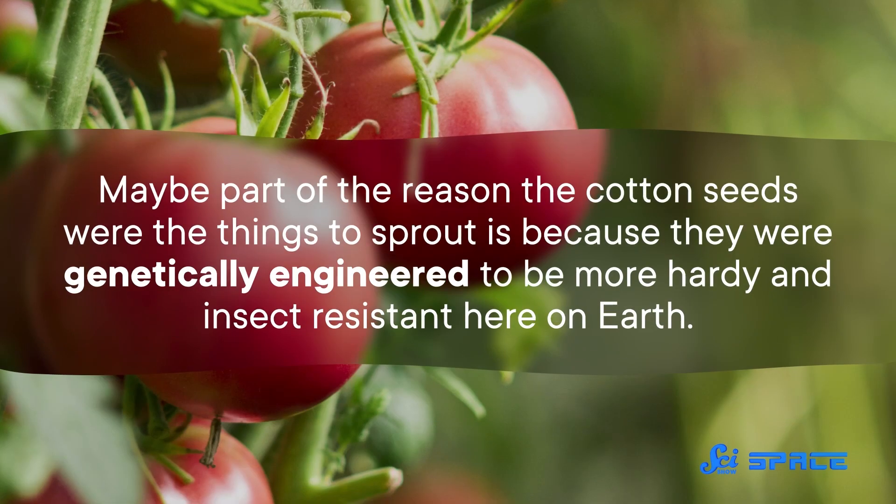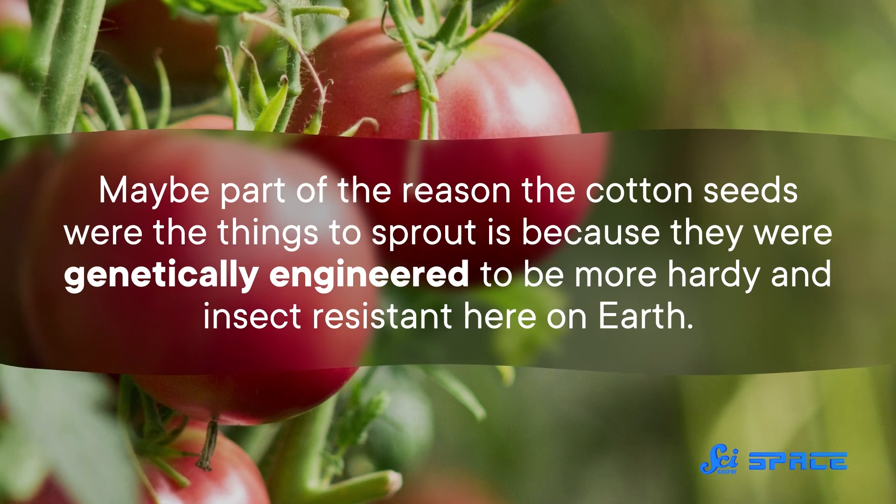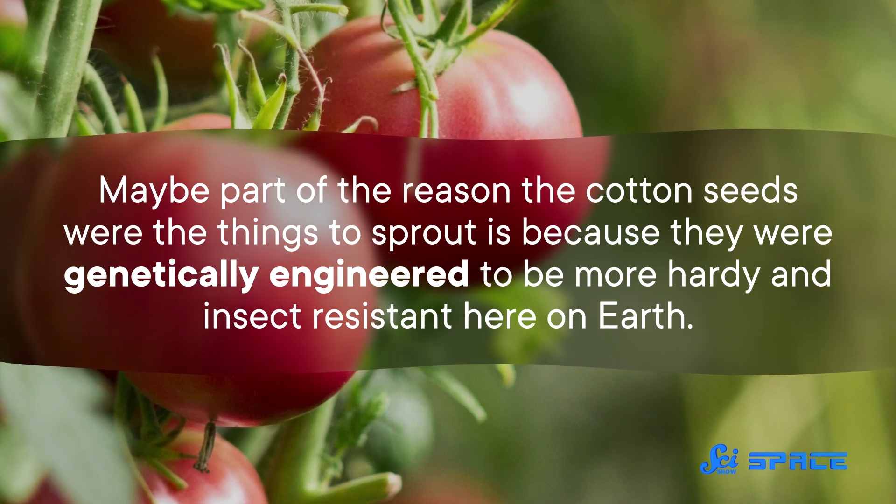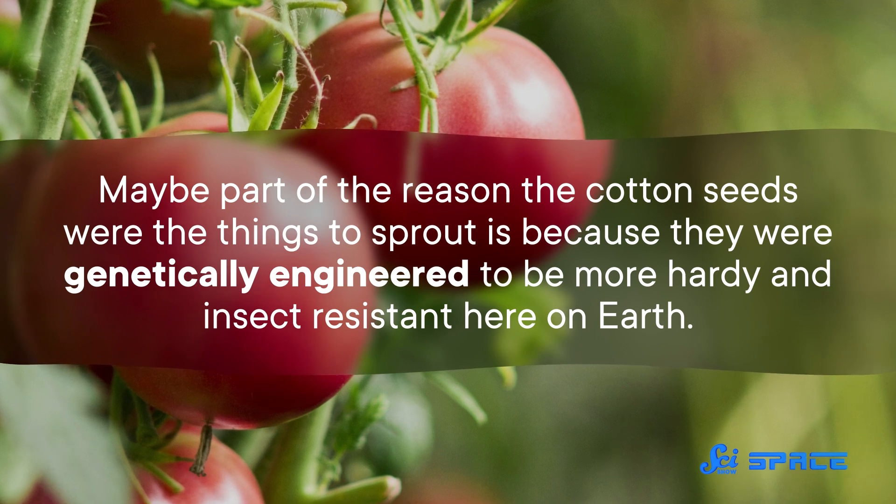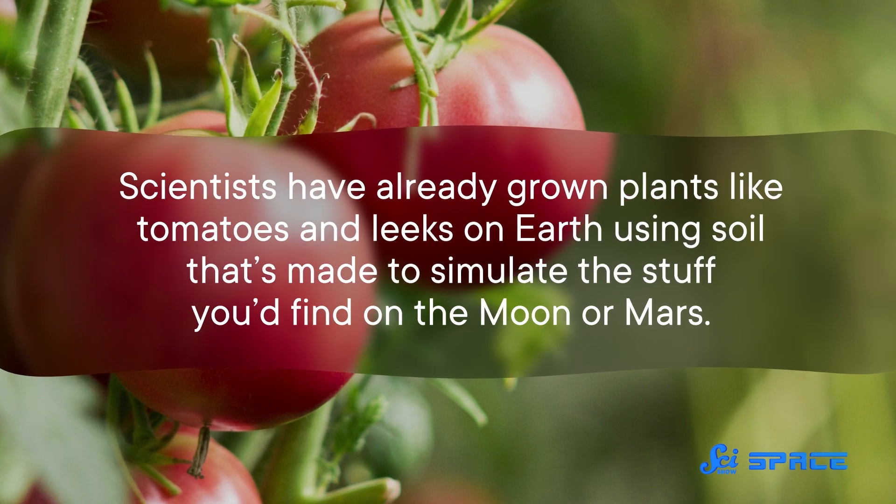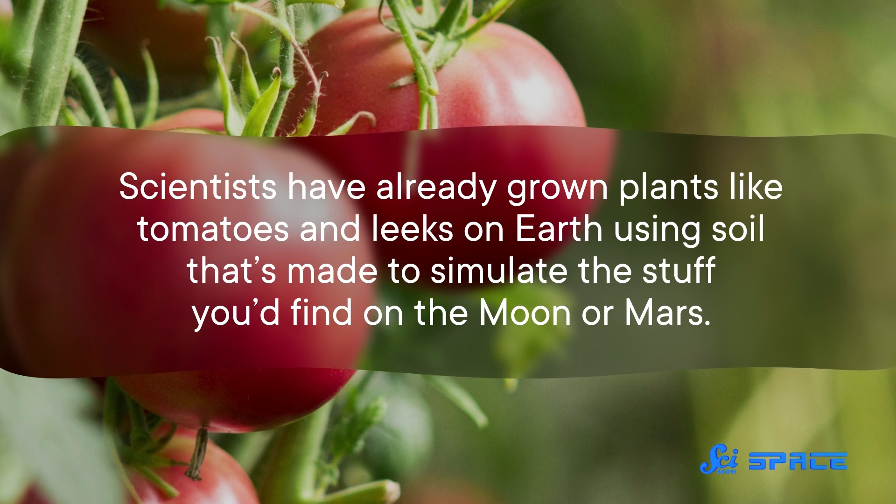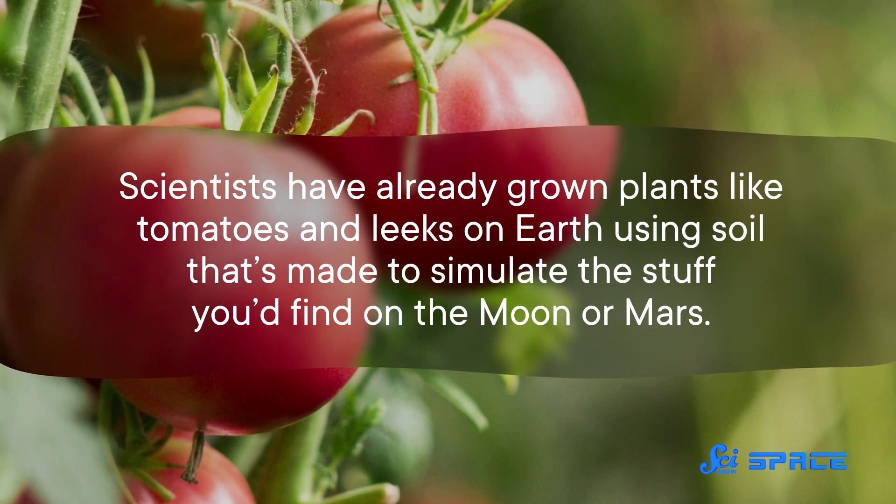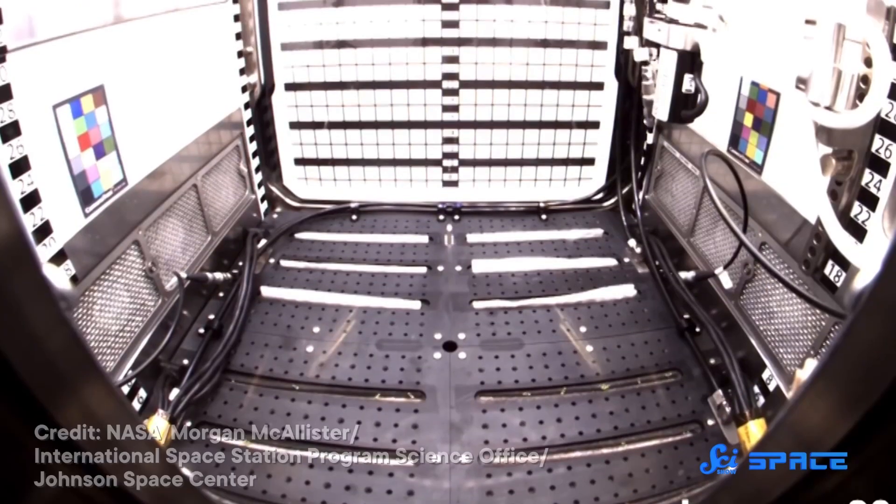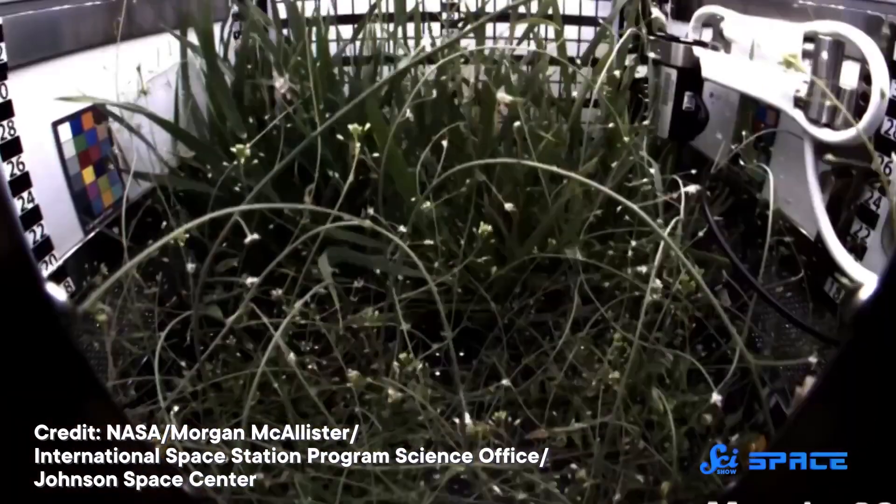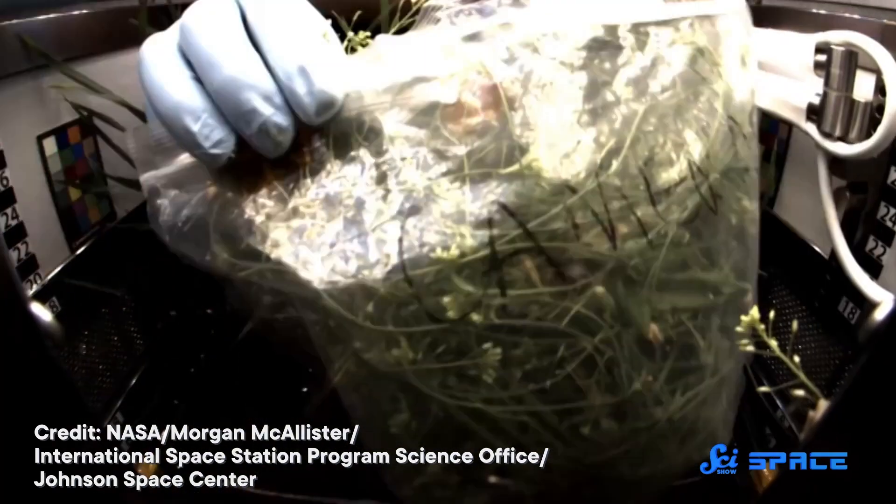We might even be able to go as far as to genetically engineer plants to grow in lunar or Martian soil. Maybe part of the reason the cotton seeds were the things to sprout is because they were genetically engineered to be more hardy and insect-resistant here on Earth. Scientists have already grown plants like tomatoes and leeks on Earth using soil that's made to simulate the stuff you'd find on the Moon or Mars. Which might still be a long way from actually growing them on Mars, but it's still one small step for humankind, and could mean we'll be munching on space veg on our way to the Red Planet in the future.